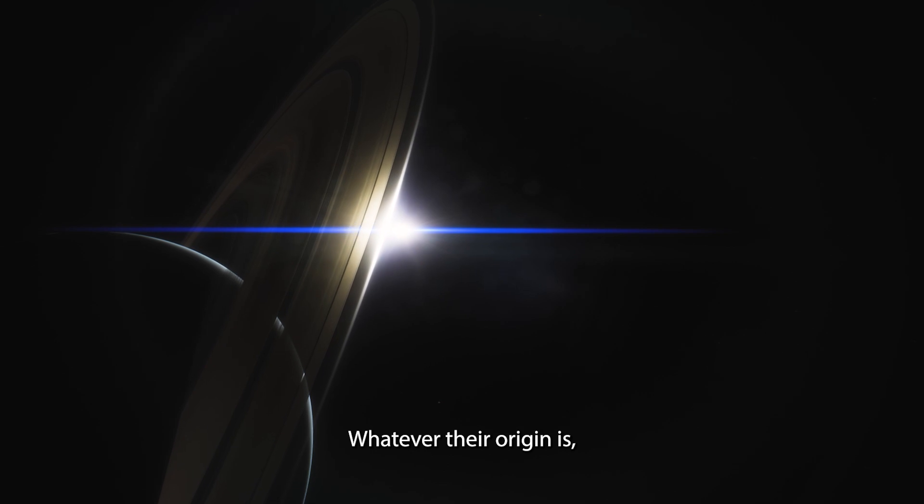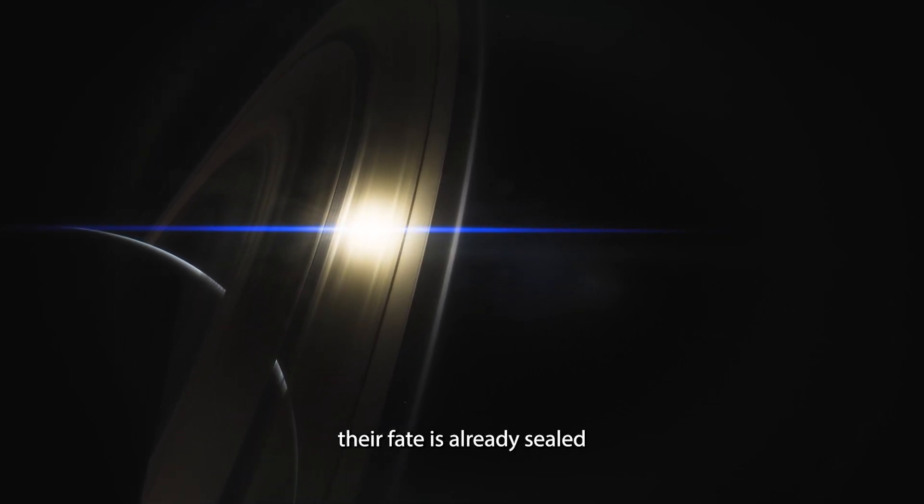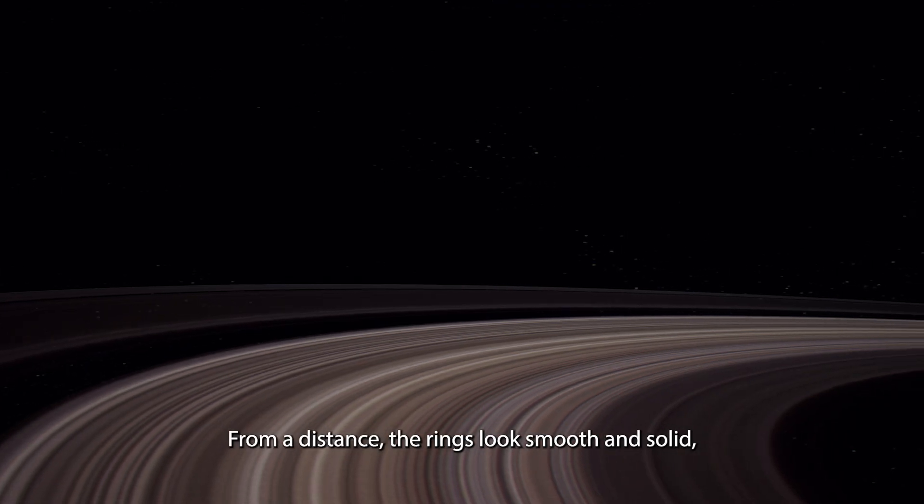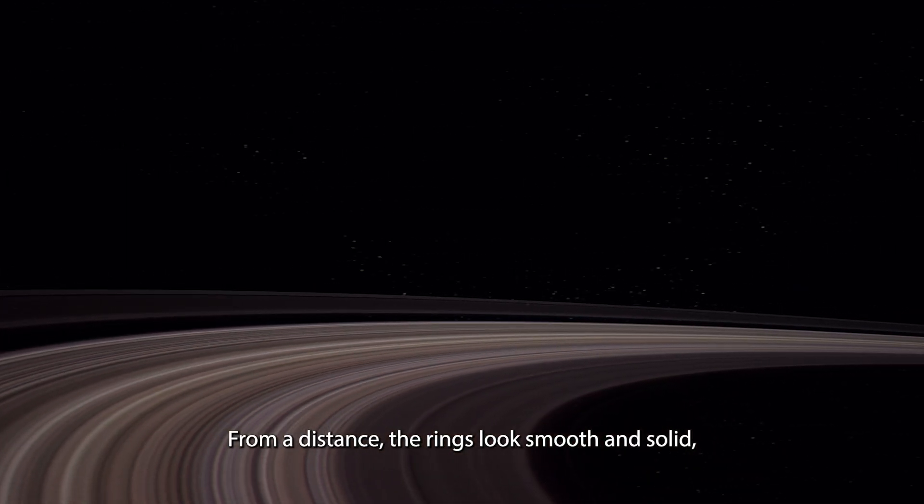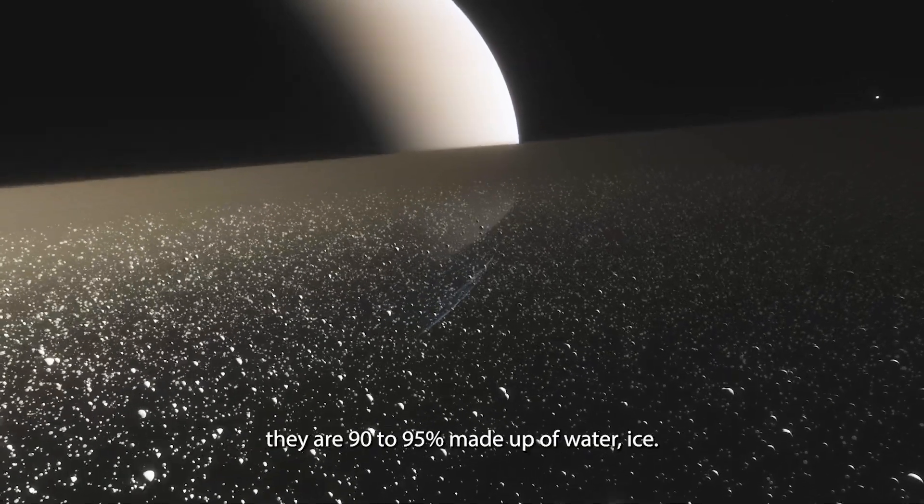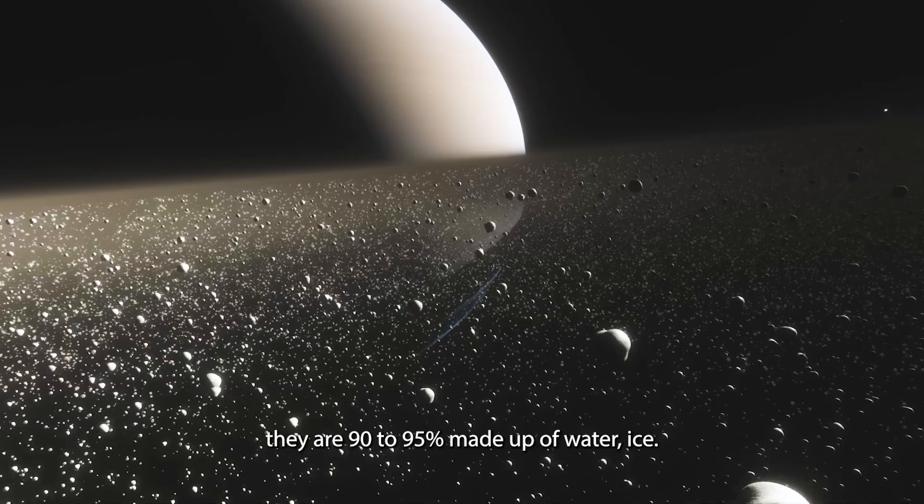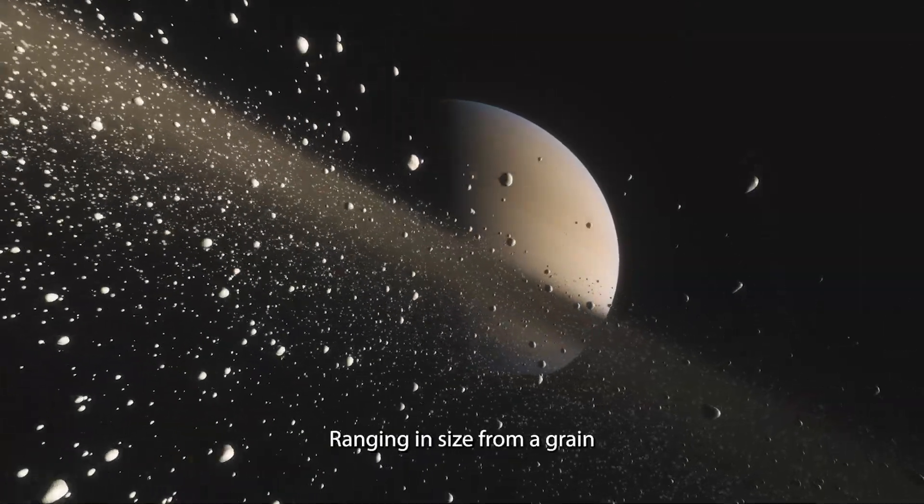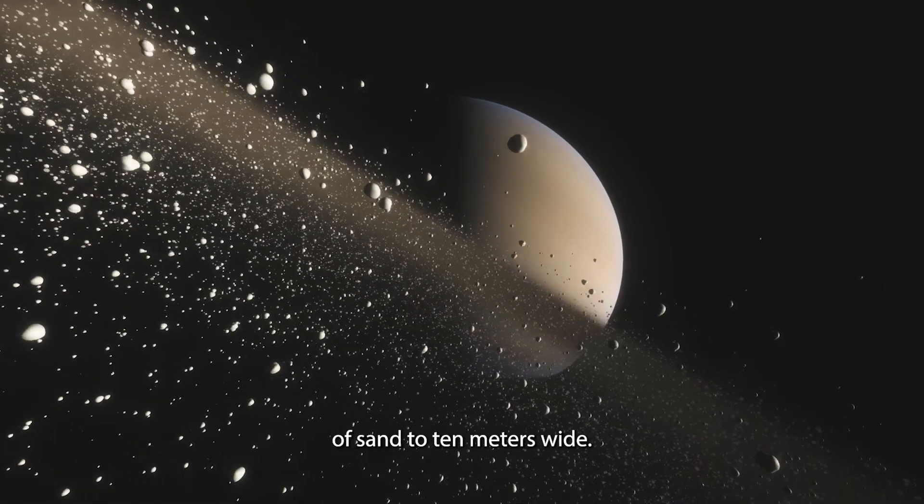Whatever their origin is, their fate is already sealed because they are not here to stay. From a distance, the rings look smooth and solid. But when you get closer, they are 90 to 95% made up of water ice, ranging in size from a grain of sand to 10 meters wide.